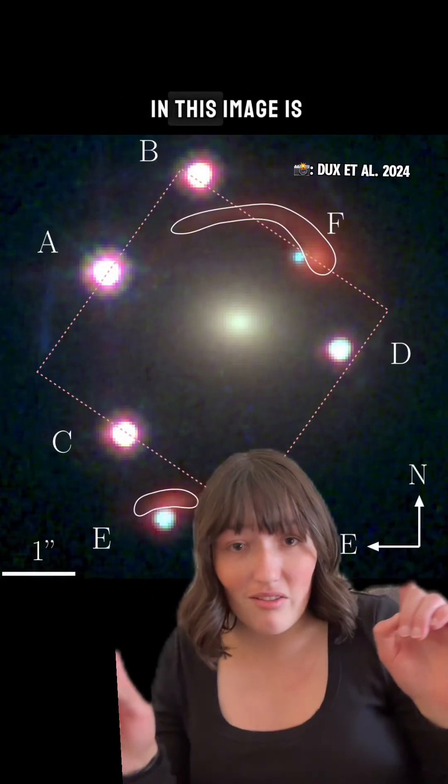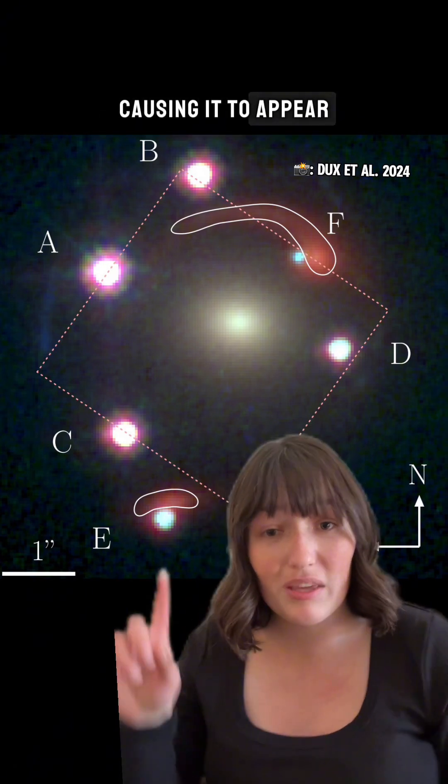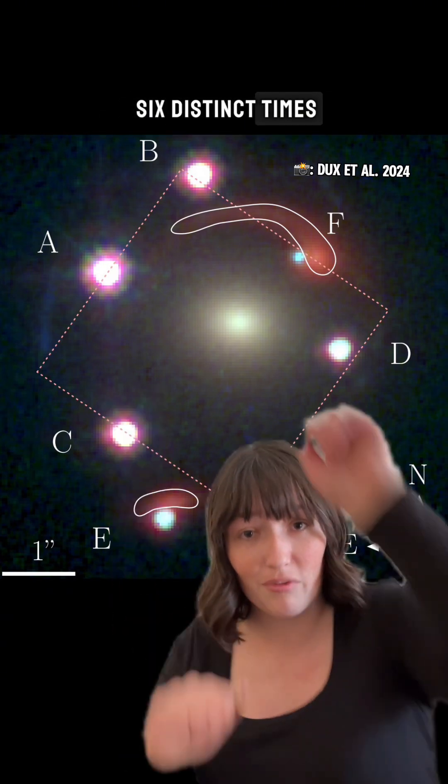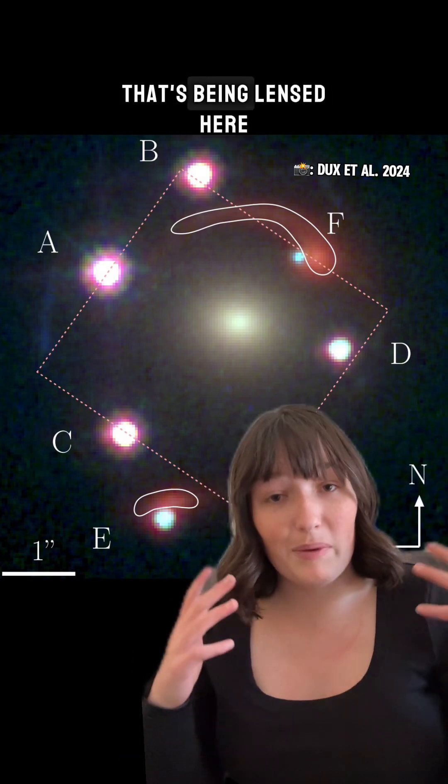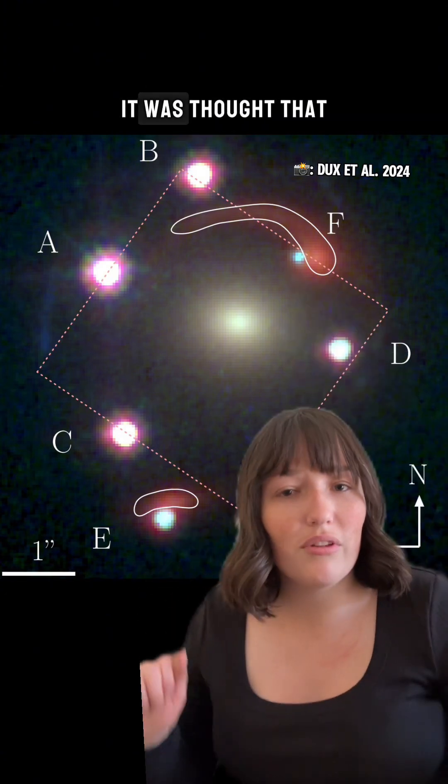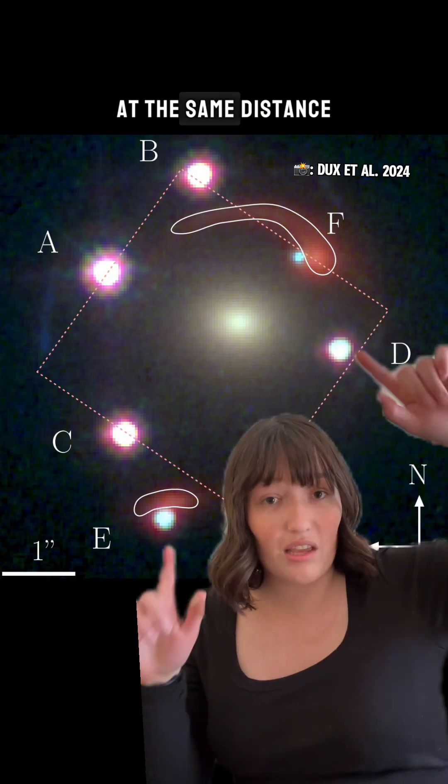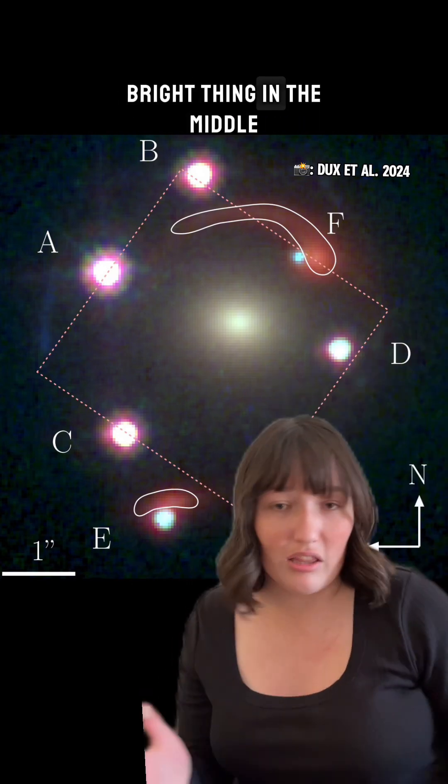So what we're seeing in this image is a quasar that is being gravitationally lensed, causing it to appear six distinct times, each of these little dots that's labeled with a letter. But there's another object that's being lensed here, and it's this red arc that we see appear twice. When initially discovered, it was thought that this was another galaxy at the same distance as the quasar, and they're just both being lensed by this bright thing in the middle.